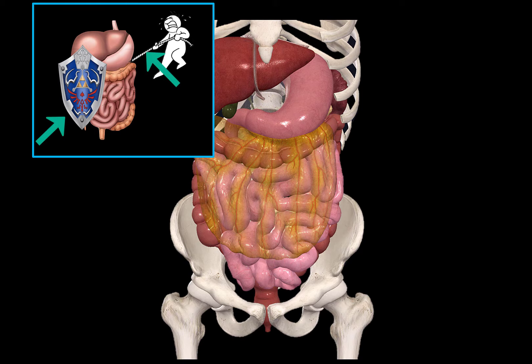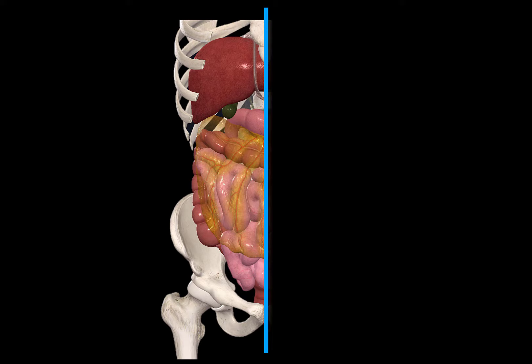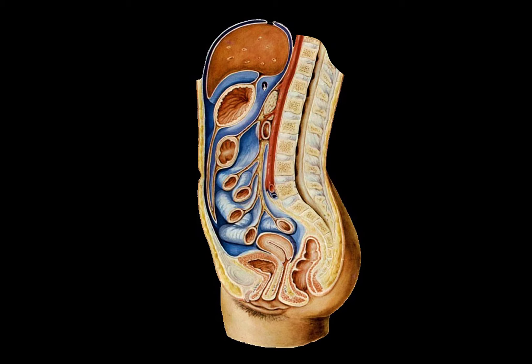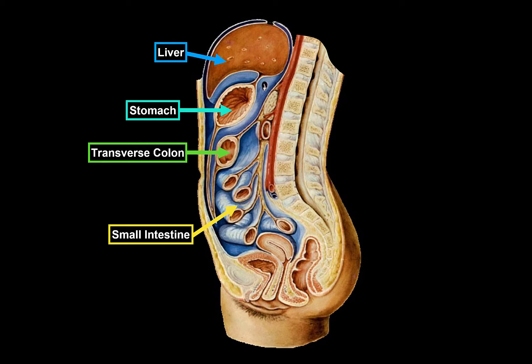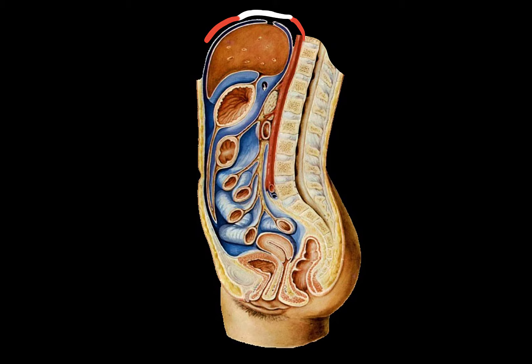Let's start by making a vertical cut of the abdominal cavity and looking at it from this perspective. For orientation, you'll find the liver, the stomach, the transverse colon, the small intestine, and the sigmoid colon of the large intestine. This is a woman's abdominal cavity, so the womb is here. Let's start by adding a perfectly drawn diaphragm.